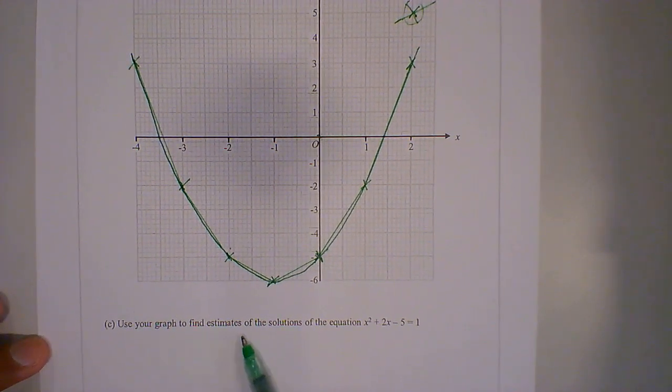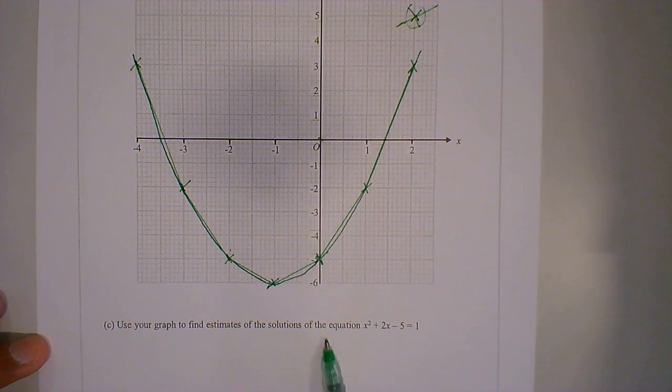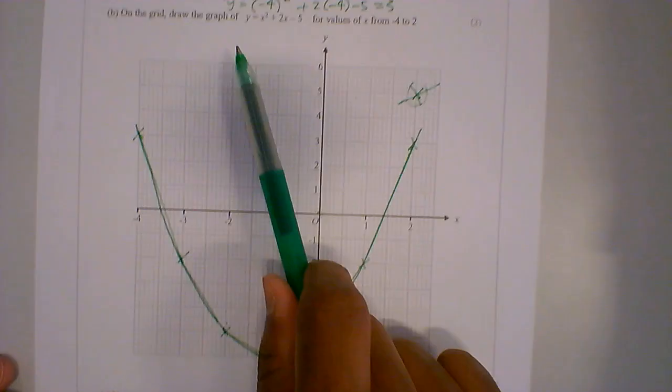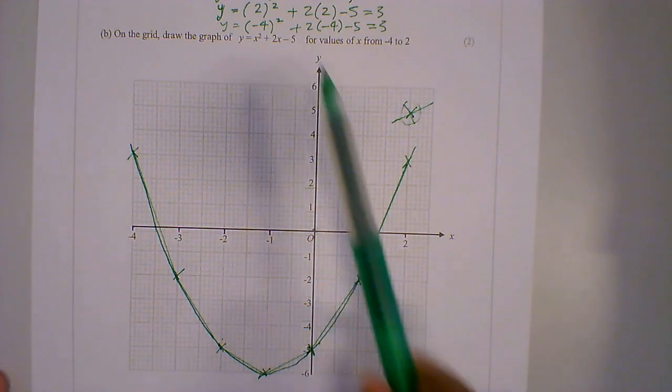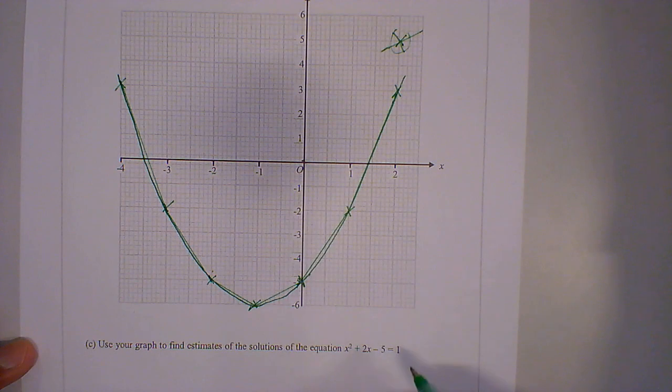Part C. Use your graph to find estimates of the solutions of the equation y = x² + 2x - 5 = 1. This graph is y = x² + 2x - 5, and I have to equal it to 1.